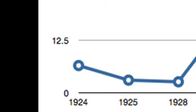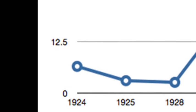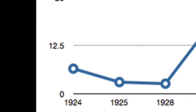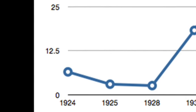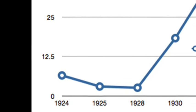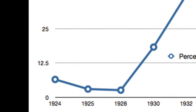By 1932, six million Germans were out of work. This desperate situation marked a dramatic increase in support for the Nazis. For example, before the crisis in 1928, the Nazis had secured just 12 representatives in the Reichstag. Two years later, in 1930, they had 107 members. Two years after that, in July 1932, 230 members of the Reichstag were Nazis.